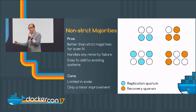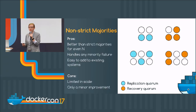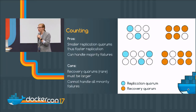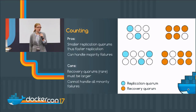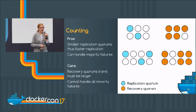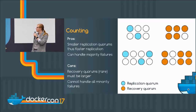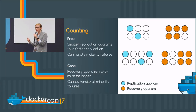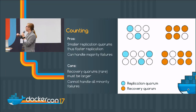And that's more fault tolerant, faster, et cetera. But we can push this even further. As long as we maintain the requirement that the quorum used for replication intersects with the quorum used for recovery, we can try all sorts of different systems. Here's another example: the replication quorum is any two nodes in a system of six.